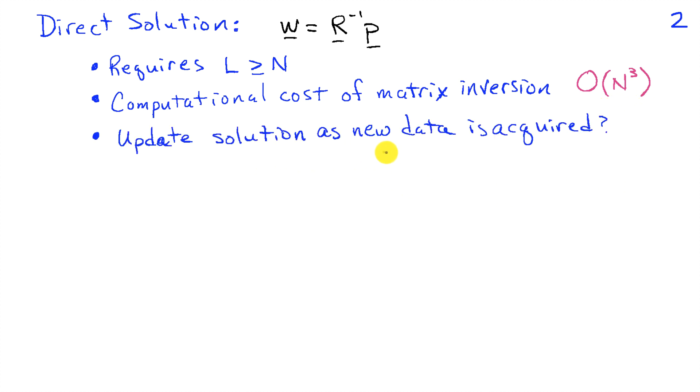Another question is, what happens if we get new data? How do we update this solution? This approach of forming the normal equations doesn't really give us any ideas how to do an update other than to recompute the matrix R and recompute the matrix inverse, which is pretty expensive. And furthermore, if L and N are very big, then you may not be able to store this matrix X in your memory, so even computing R could be a challenging task.